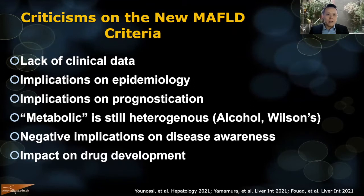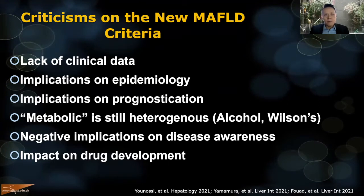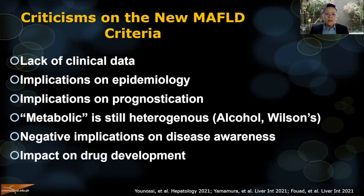Critics also question implications on prognostication. Other critics note that alcohol and Wilson's disease also cause metabolic derangements that lead to fatty liver, so using the word 'metabolic' may be misleading. Those are the minor arguments against MAFLD. Another argument is that advocates have worked hard for fatty liver disease to be recognized as a serious condition worth following up.